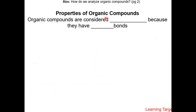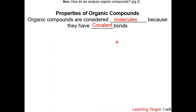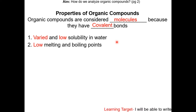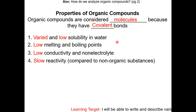For the properties of organic compounds: organic compounds are considered molecules because they have covalent bonds, so their properties are very similar to covalent molecules. Here are the four common properties: very low solubility in water, low melting points and boiling points, low conductivity and is a non-electrolyte, and slow reactivity compared to non-organic substances.